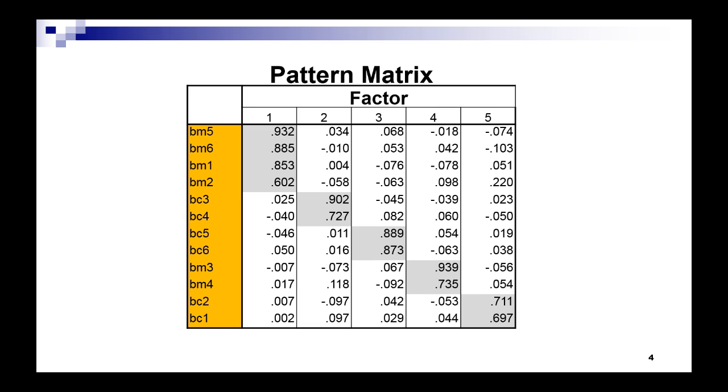Interchangeability implies correlation. The EFA is a tool for finding groups of highly correlated items. So this works great for interchangeable, reflective measures. However, formative measures are not required to be correlated. This means the EFA does not always work on formative measures.